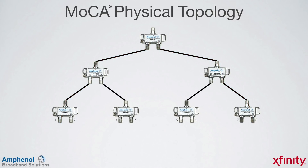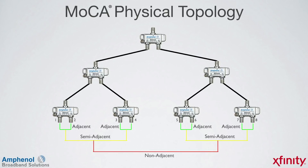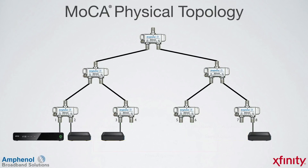With traditional splitters, we have several port-to-port isolation paths with different losses. Ports 1 to 2, 3 to 4, 5 to 6, and 7 to 8 are called adjacent ports and have the least amount of loss. Port groups 1 to 4 and 5 to 8 are called semi-adjacent ports, with the port-to-port isolation of a four-way splitter. Port groups between 1 to 4 and 5 to 8 are called non-adjacents and have the most amount of loss. This is where knowing about port-to-port isolation comes into play for a MOCA installation.